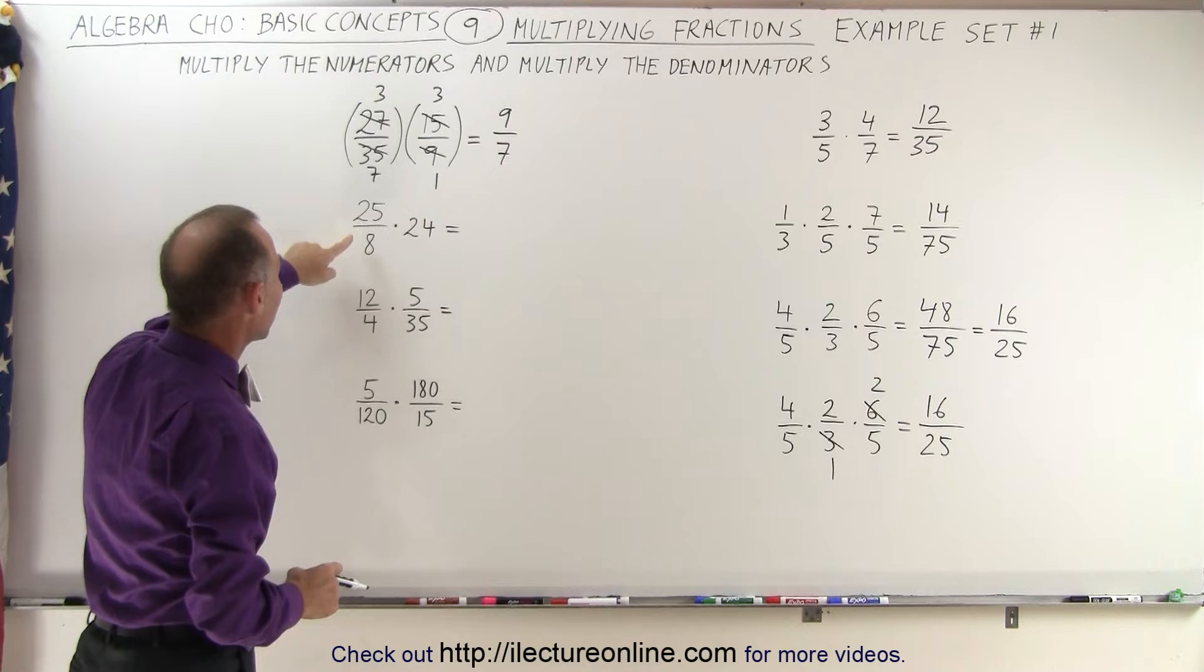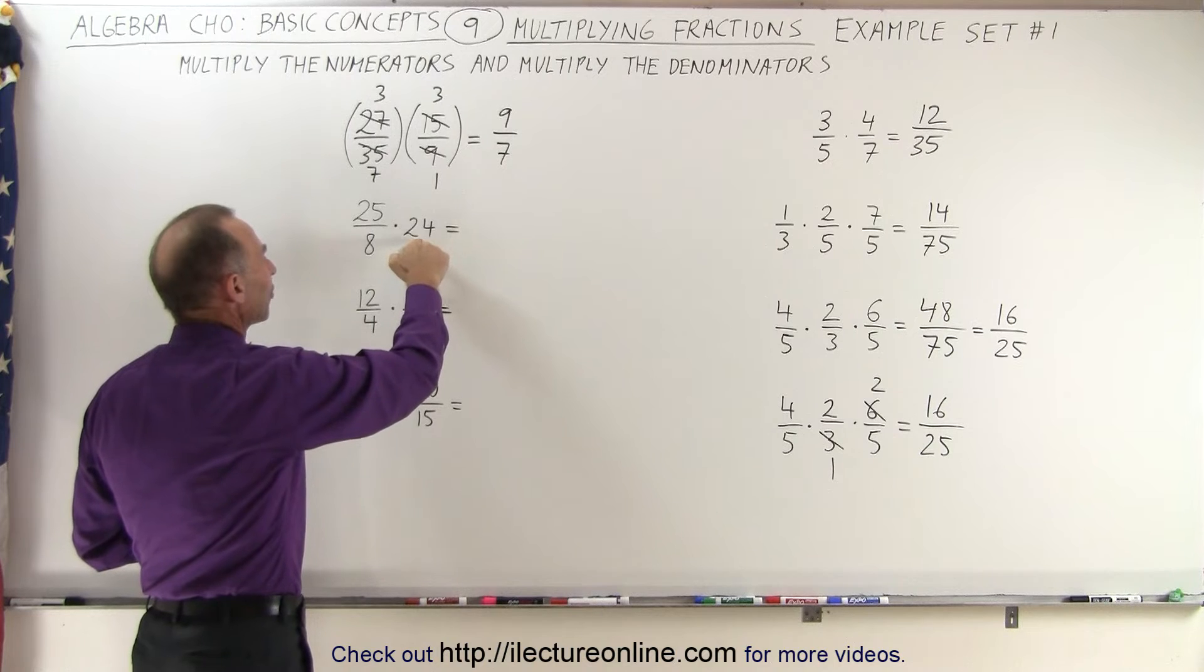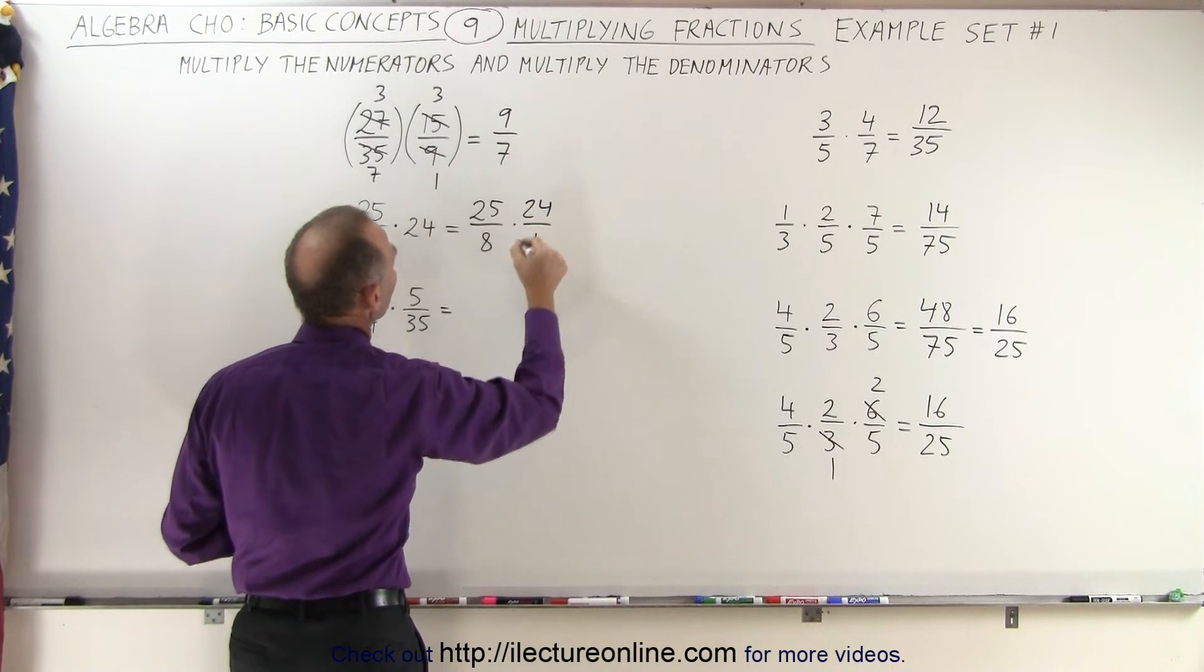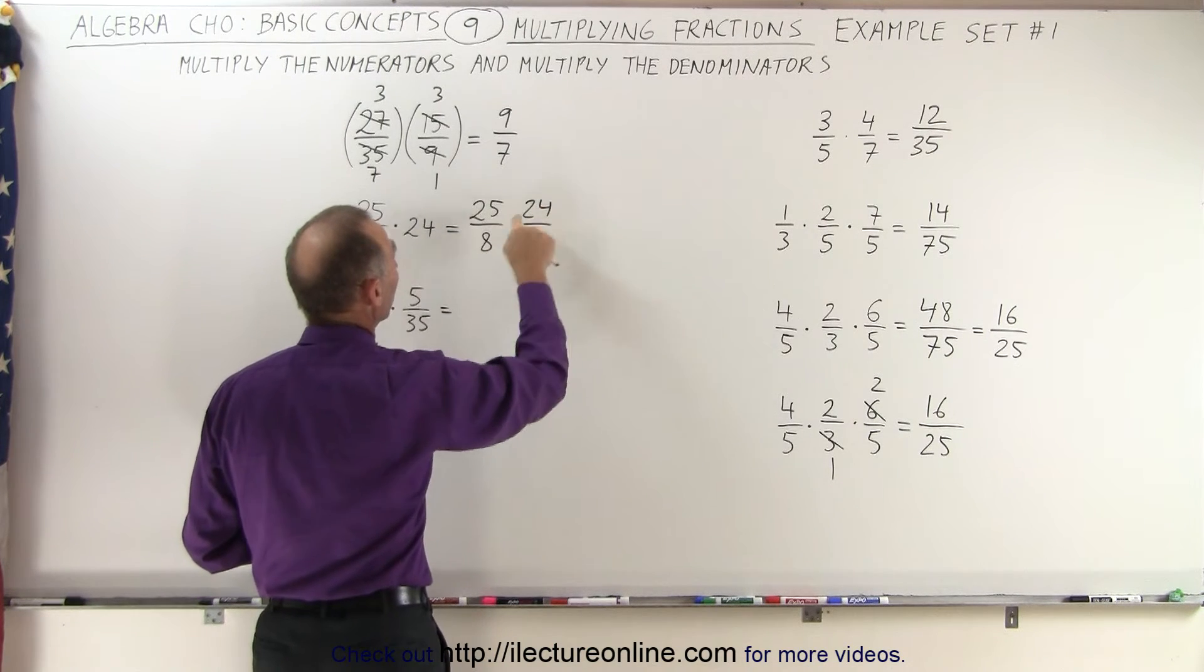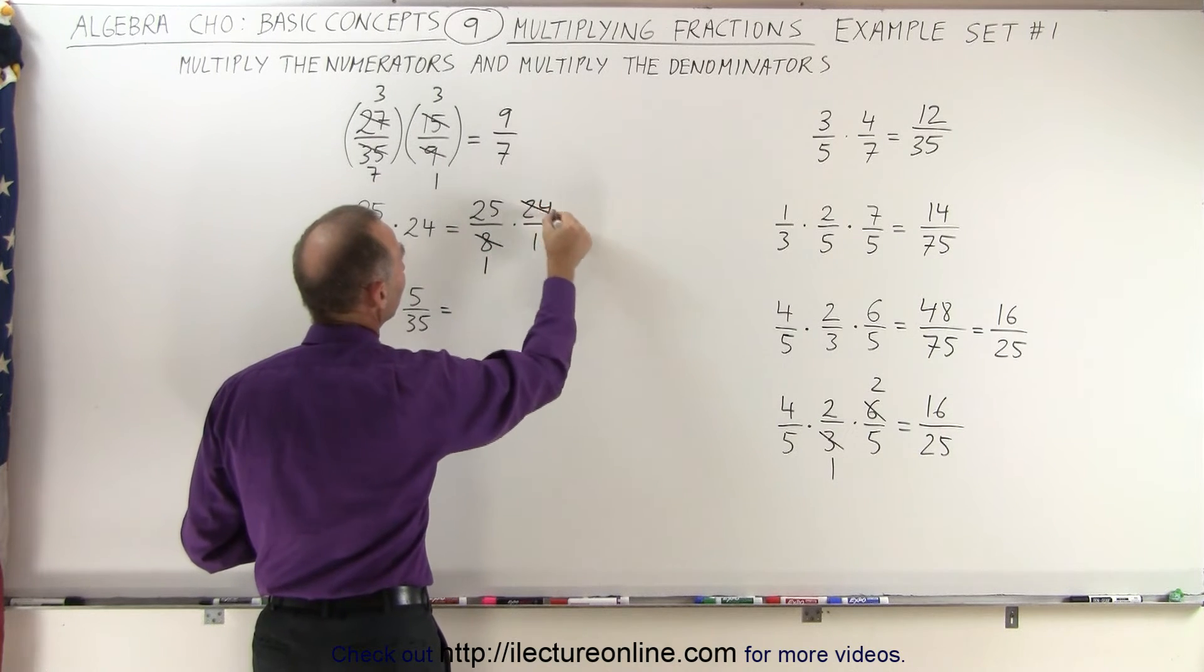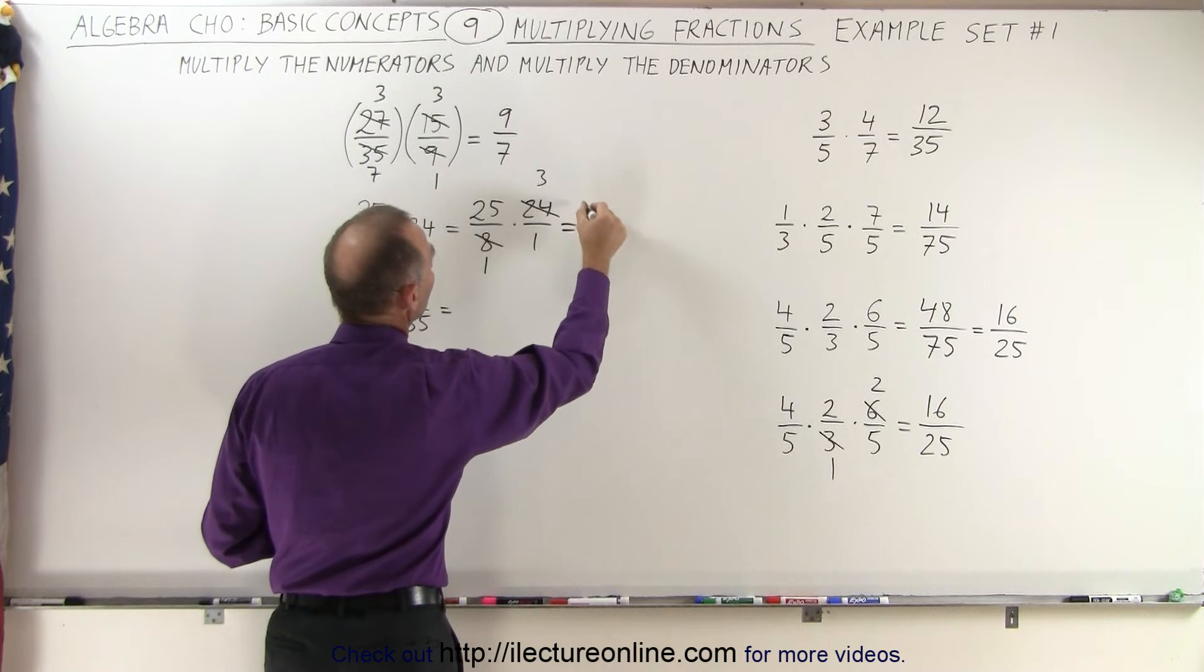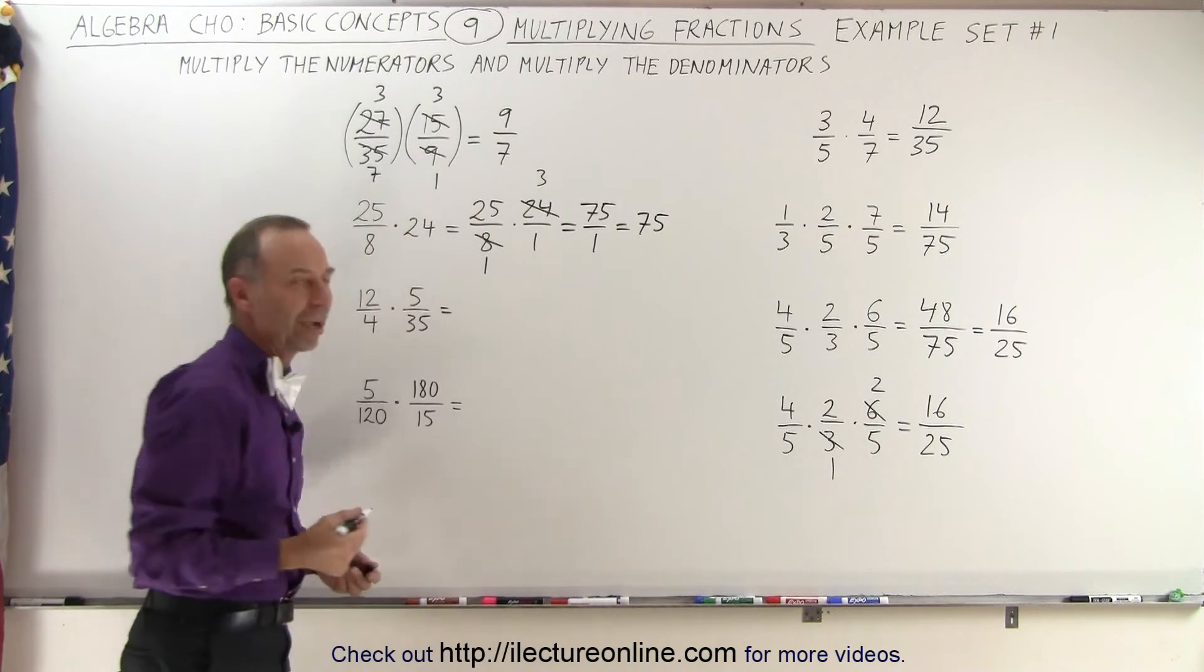Here when we have 25 divided by 8 times 24, we could write this as a fraction: 24 divided by 1. So this becomes 25 over 8 times 24 over 1. Before we multiply that out, we see that 8 and 24 are both divisible by 8. 8 goes into 24 three times. So 8 divided by 8 is 1, and 24 divided by 8 is 3. Now we have only ones in the denominator and 25 and 3 in the numerator. That means it's 75 over 1, or simply just 75. We don't have to write it as a fraction over 1.